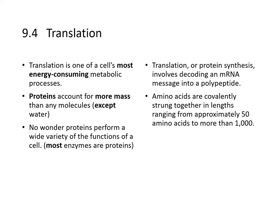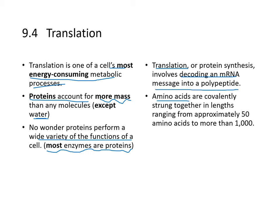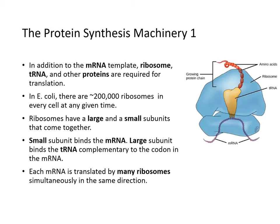Translation is the cell's most energy-consuming metabolic process — the creation of proteins. Proteins account for more mass than any other molecule except water in most organisms, and they carry out a wide variety of functions. The vast majority of enzymes are proteins. Translation, or protein synthesis, involves decoding the messenger RNA message into a polypeptide. Polypeptide lengths range from 50 amino acids to more than 1,000 in a finished protein. In addition to the messenger RNA template, ribosomes, tRNA, and other proteins are required.